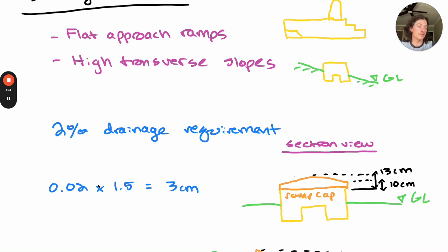And I've shown this in a section view, how the edges of the ramp cap will be 10 centimeters, going up to 13 centimeters in the middle, and this will help water drain off either side.